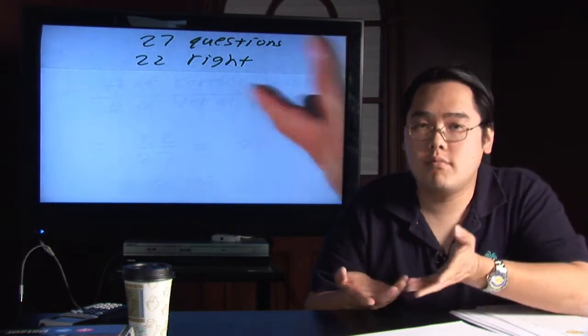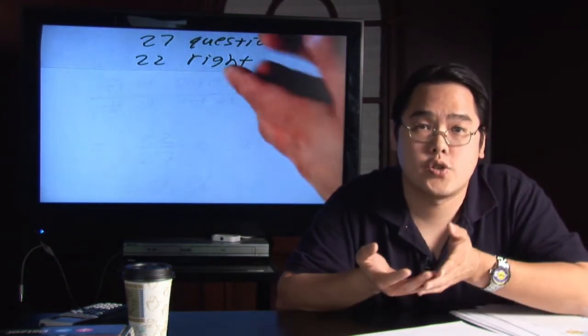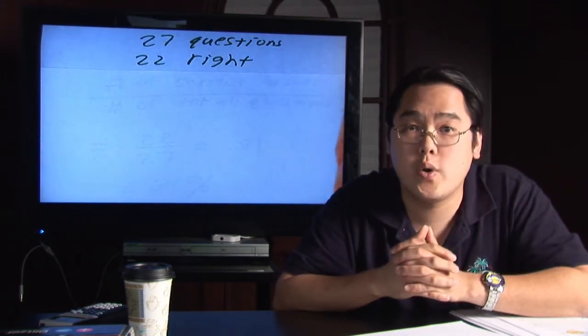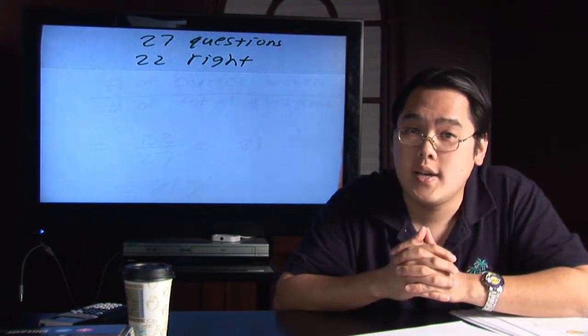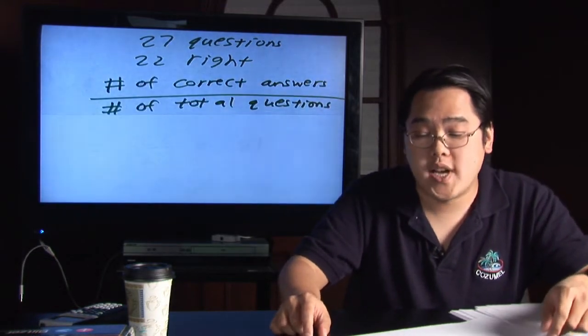Now suppose you were given a test, let's just say it's 27 questions and let's just say the student that you want to find the test score for got 22 of those questions right. Now, the formula for calculating a test score is actually very straightforward.